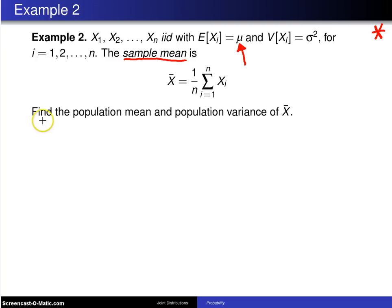So, the goal in this question is to find the population mean and the population variance of x̄. That is to find the expected value of x̄ and find the variance of x̄. Well, starting out with the expected value of x̄...